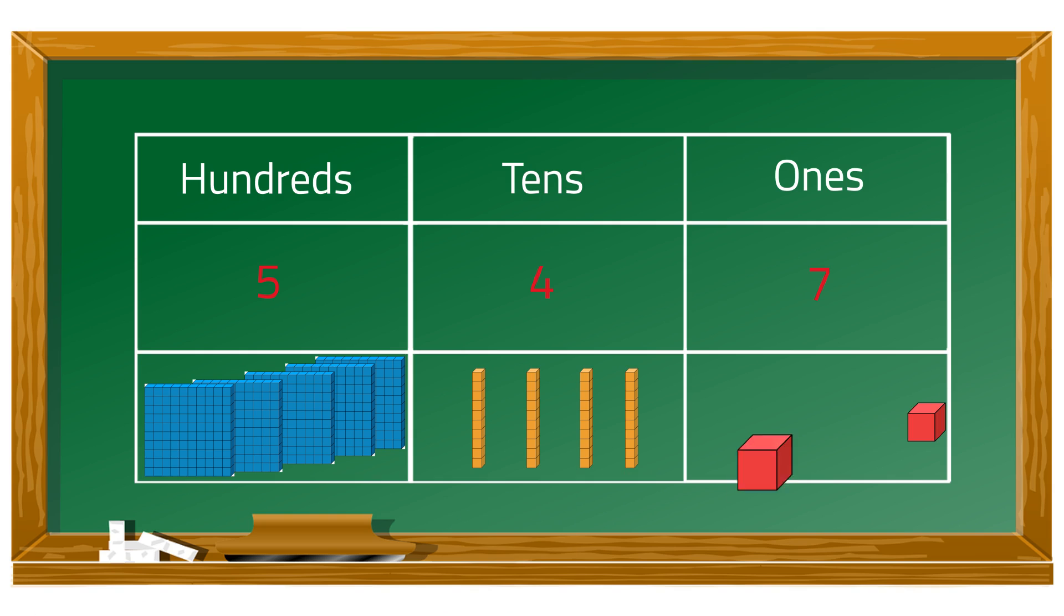Lastly, we need 7 blocks wherein 1 block is equal to 1. 1, 2, 3, 4, 5, 6, 7 blocks. That means we have 7 ones.